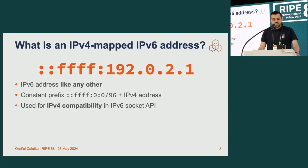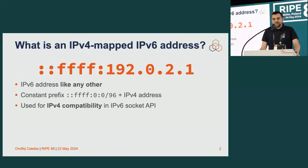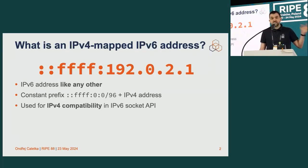Back to IPv4-mapped addresses — what are they? You've probably already seen them. Is there anybody who has never seen an address starting with ::ffff followed by an IPv4 address? It's completely valid to write an IPv6 address where the last 32 bits are written exactly like an IPv4 address. Don't be fooled — it's just a completely legal and valid way of writing an IPv6 address.